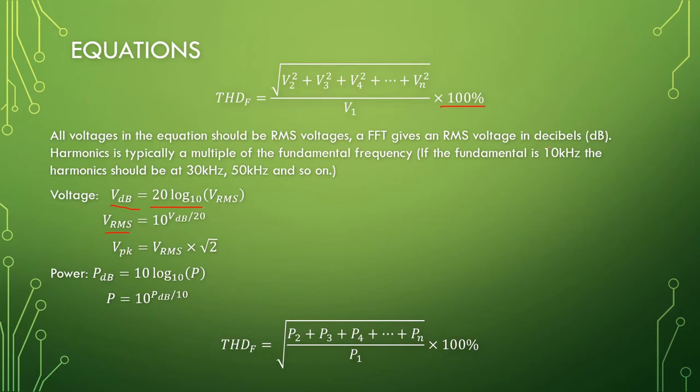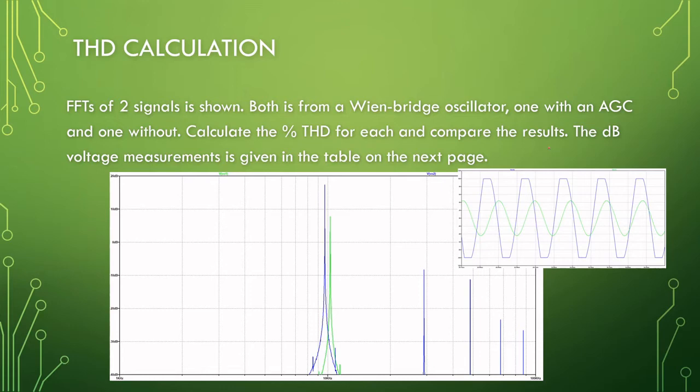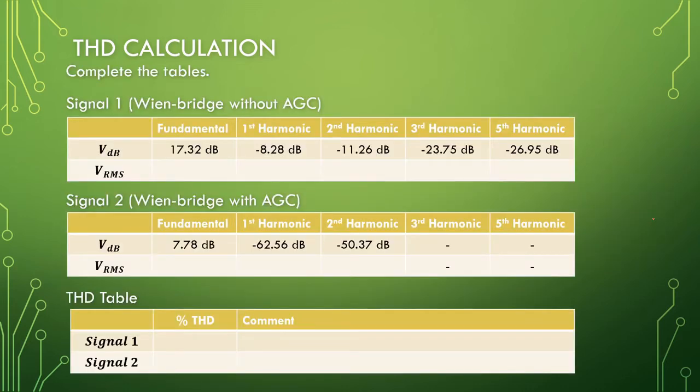Before we go to a simulation, here is a small problem to do the calculation. There are two signals measured and this is what they look like. The blue one is very distorted and the green one is less distorted.